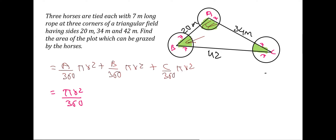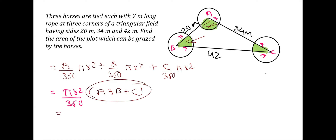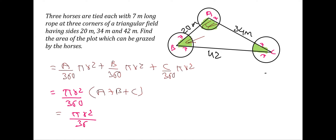Taking pi r squared and 360 as common, inside we get angle A plus angle B plus angle C. We replace A plus B plus C using the angle sum property of a triangle, which is 180 degrees. So we get pi r squared divided by 360 multiplied by 180, which reduces to pi r squared divided by 2.